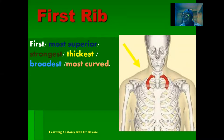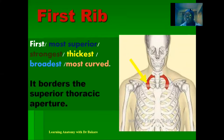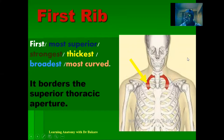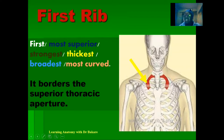The first rib is highlighted in red. The first rib also forms one of the structural alignments of the superior thoracic aperture. The superior thoracic aperture is the thoracic inlet, which is the superior boundary of the rib cage. The superior thoracic aperture is formed by the medial border of the first rib, the medial border of the first costal cartilage, the superior border of the manubrium, which is the upper part of the sternum, and posteriorly the body of the first thoracic vertebra.